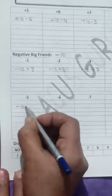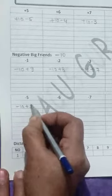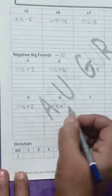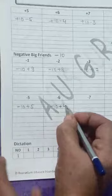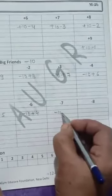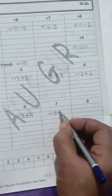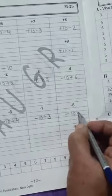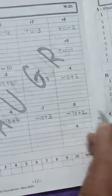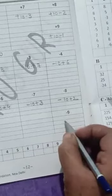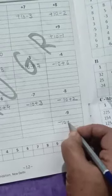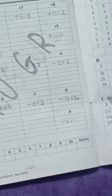For minus 5: minus 10 add 5. Minus 10 add 6, friend is 4. Minus 10 add 3. Minus 10 add 2. For minus 9: minus 10 add 1. Now you have to complete it.